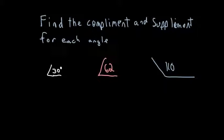So complement has to add up to 90. So I would do 90 minus 30 equals 60 degrees. I'll just put C for complement and S for supplement. So supplement has to add up to 180. So we're going to subtract the 30 from 180 and get 150 degrees for our supplement.